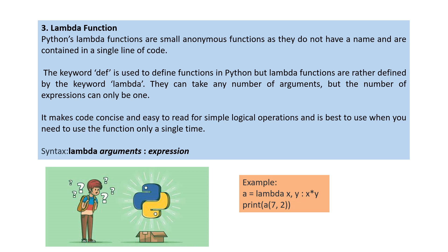The syntax here is lambda arguments colon expression. The example here is a equals lambda x comma y colon x asterisk y. We can print it as a of 7. If you pass the arguments as 7 comma 2 then we get the multiplication with the result of 14.